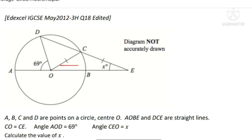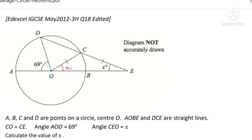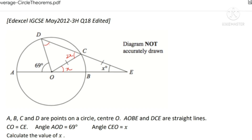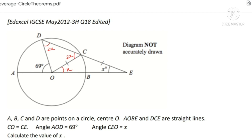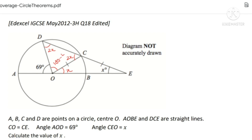We are given that CO is equal to CE. Therefore, this angle is also X because angles opposite to equal sides are equal. So this angle is 2X — the exterior angle is equal to the sum of opposite interior angles. And this angle is also 2X because OD and OC are radii of the circle.